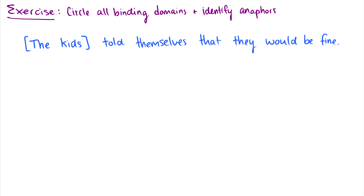Let's take a look at this sentence as an exercise: 'The kids told themselves that they would be fine.' Pause the video, circle all binding domains, identify anaphors, and talk about which binding principles are in effect for each pronoun. There are two items: one anaphor — 'themselves' — and one pronoun — 'they.'